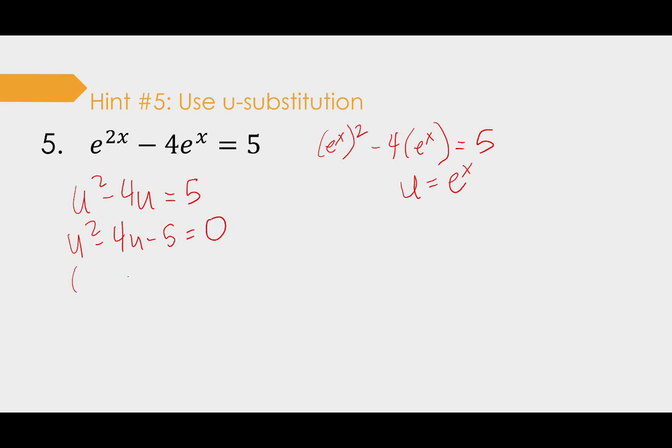So u and u need to multiply to be negative five. So negative five and add to be negative four. So negative five and plus one. Solving those, u equals five and u equals negative one. But remember, you got to remember what u is, what u was. It's not bad grammar. I'm just talking about the variable.